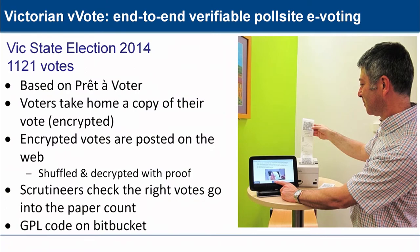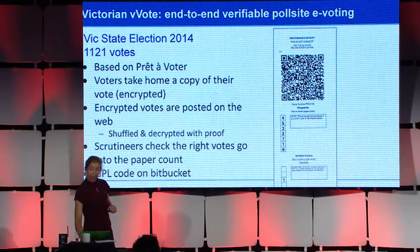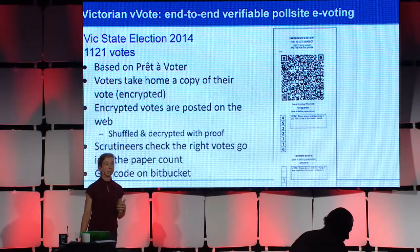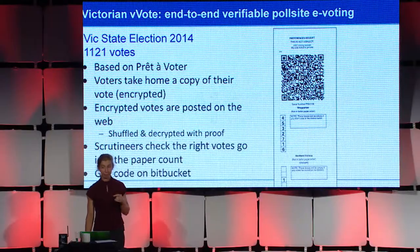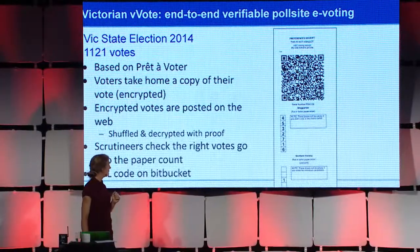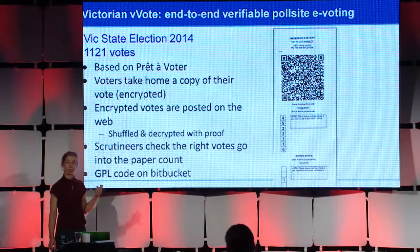Here's how this system works. It took 1,121 votes in the state election in supervised polling places. It's based on the PretaVote end-to-end verifiable cryptographic voting system. The voter comes into the polling place, interacts with a computer, and takes home with them an encrypted version of their vote. The idea is that while they're there in the polling place, they're interacting with the system in a way that gives them some good evidence that this complicated-looking thing accurately reflects the vote they intended to cast. Then the encrypted votes are posted on the web bulletin board, and there's some fancy crypto involved in a clever proof that they're accurately shuffled and properly decrypted.